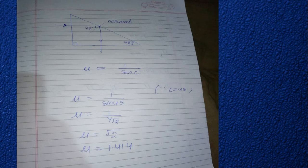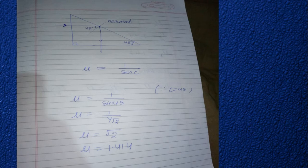First of all, let us know the condition of TIR. The first condition is that the ray of light must travel from a denser medium to a rarer medium. The second condition is that the angle of incidence must be greater than the critical angle.